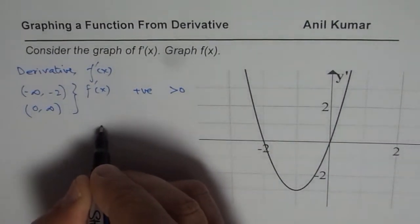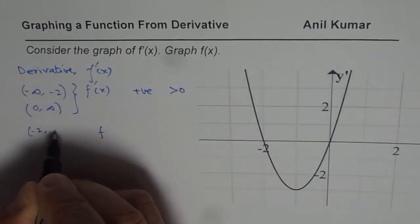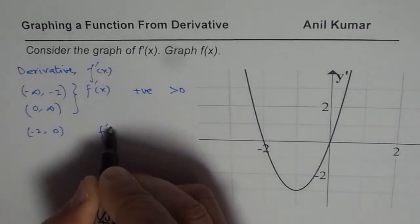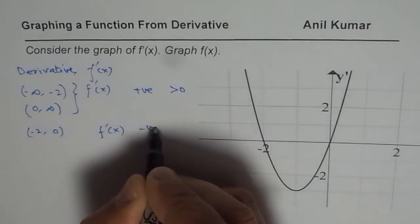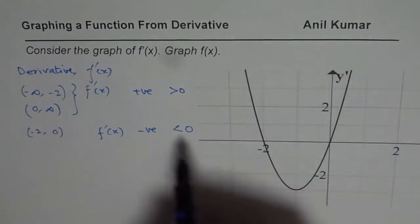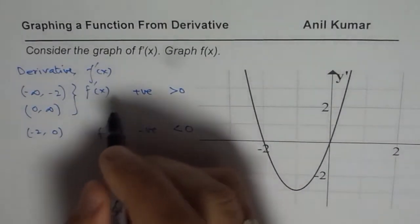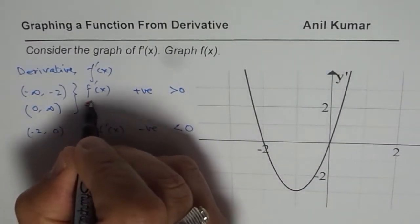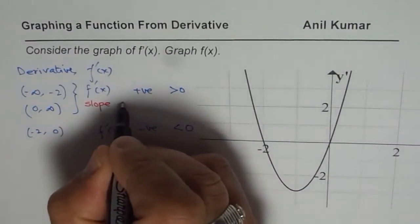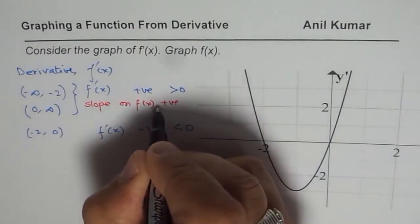However, if we take a value between minus 2 and 0, the derivative of the function is negative, less than 0. Now what does derivative being positive or negative mean? Derivative is the slope of a tangent line. So slope on f(x) is positive.